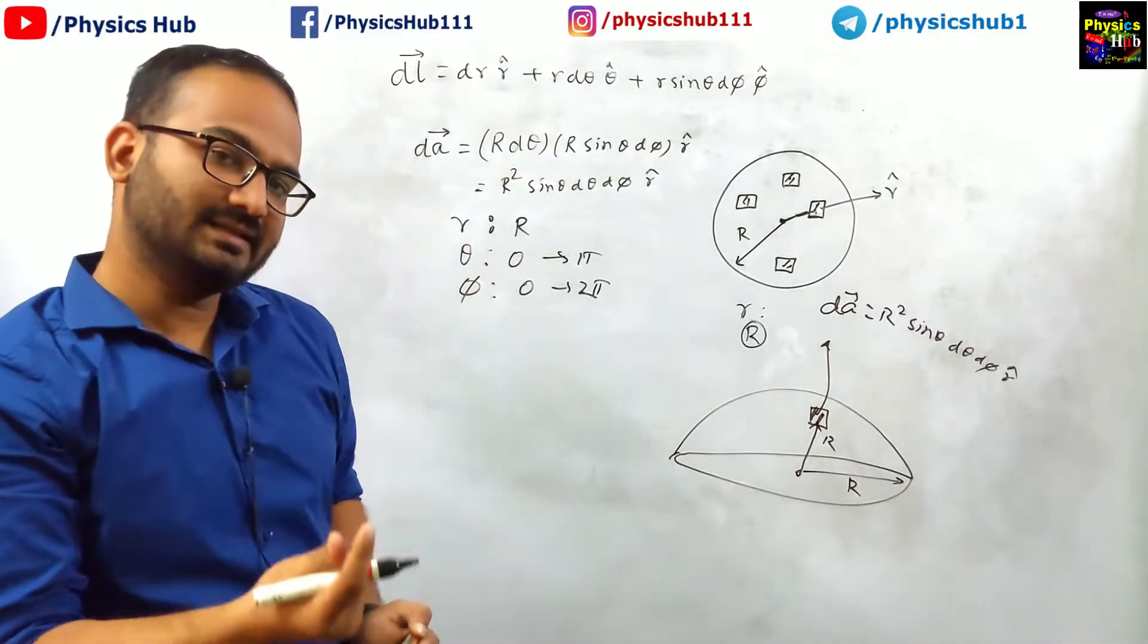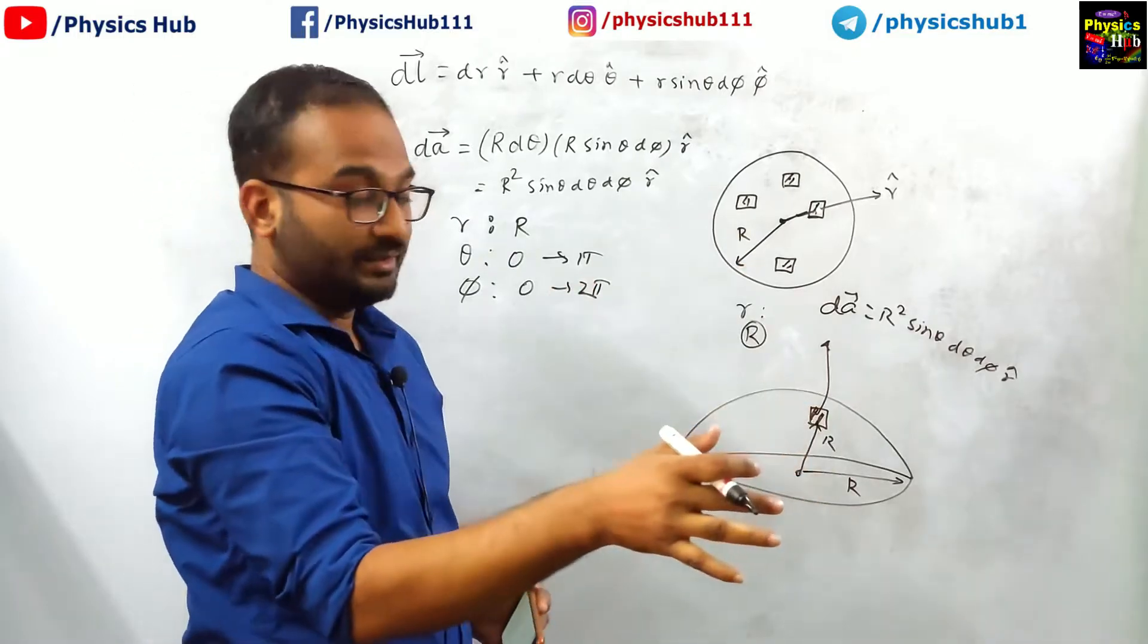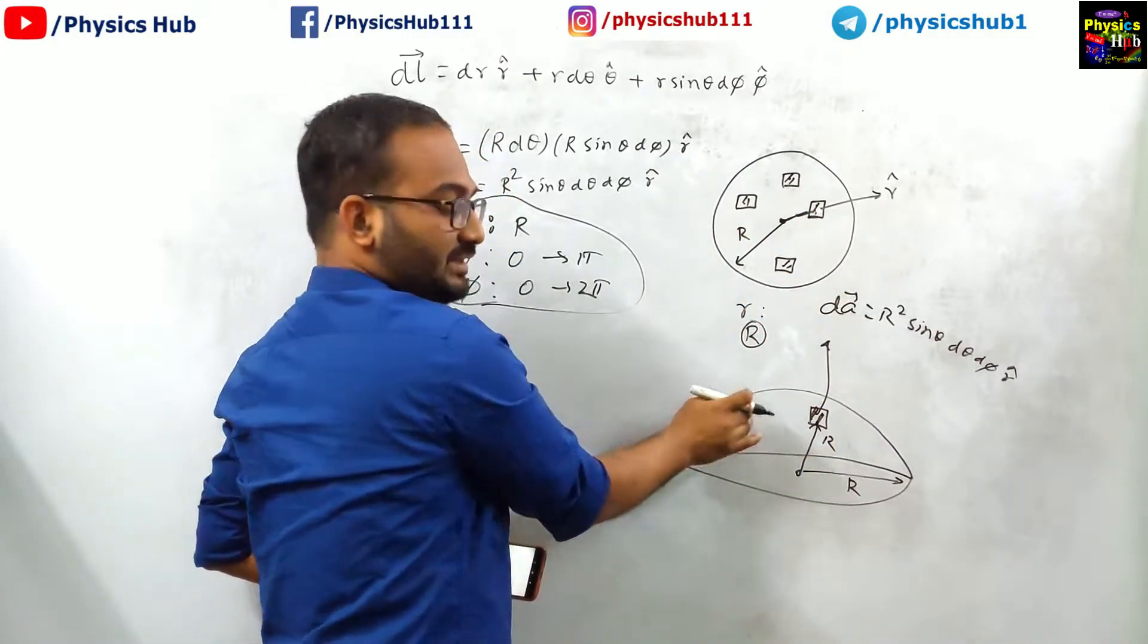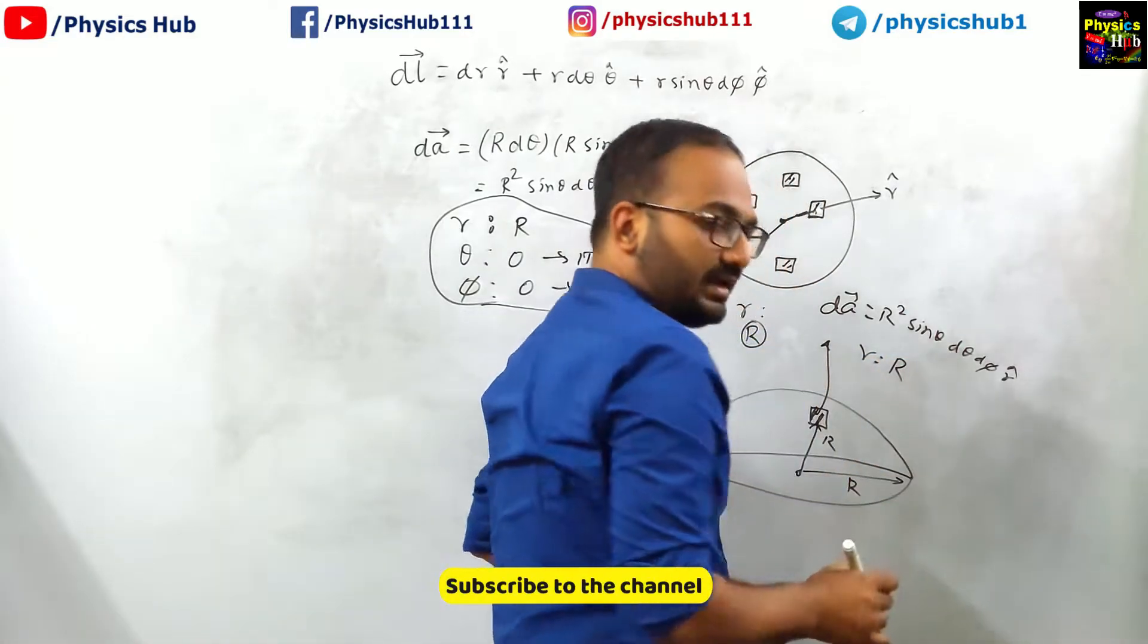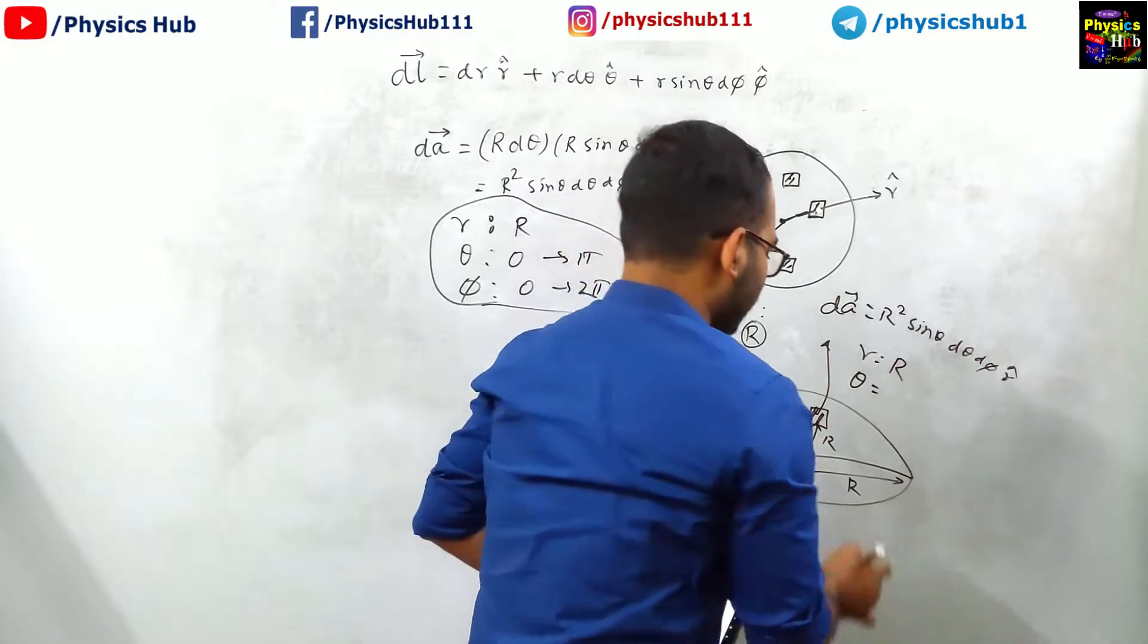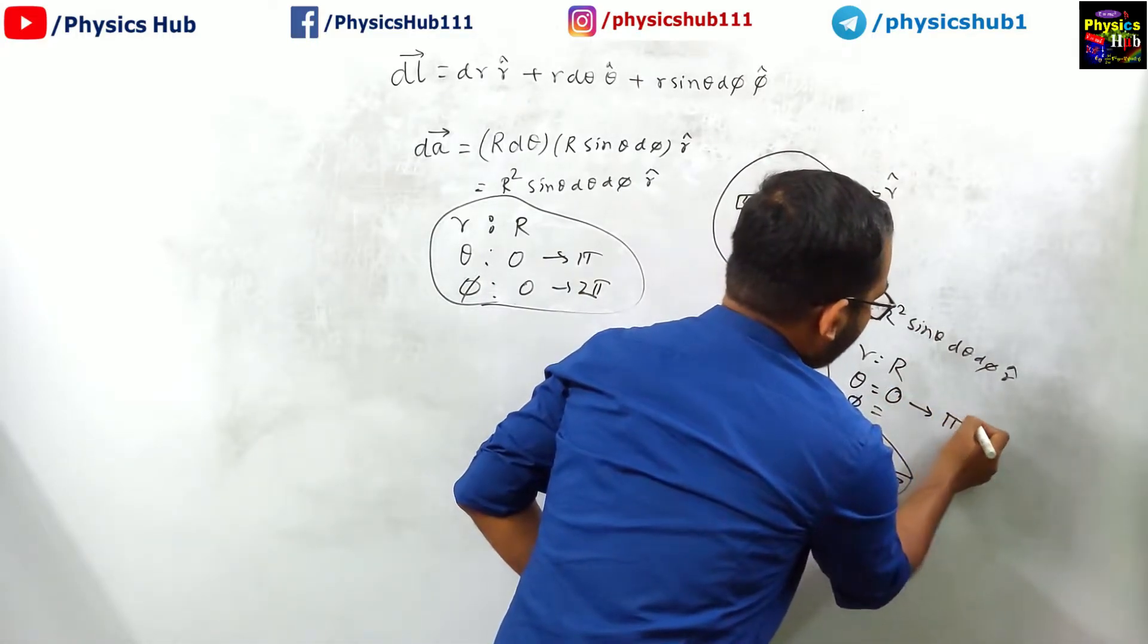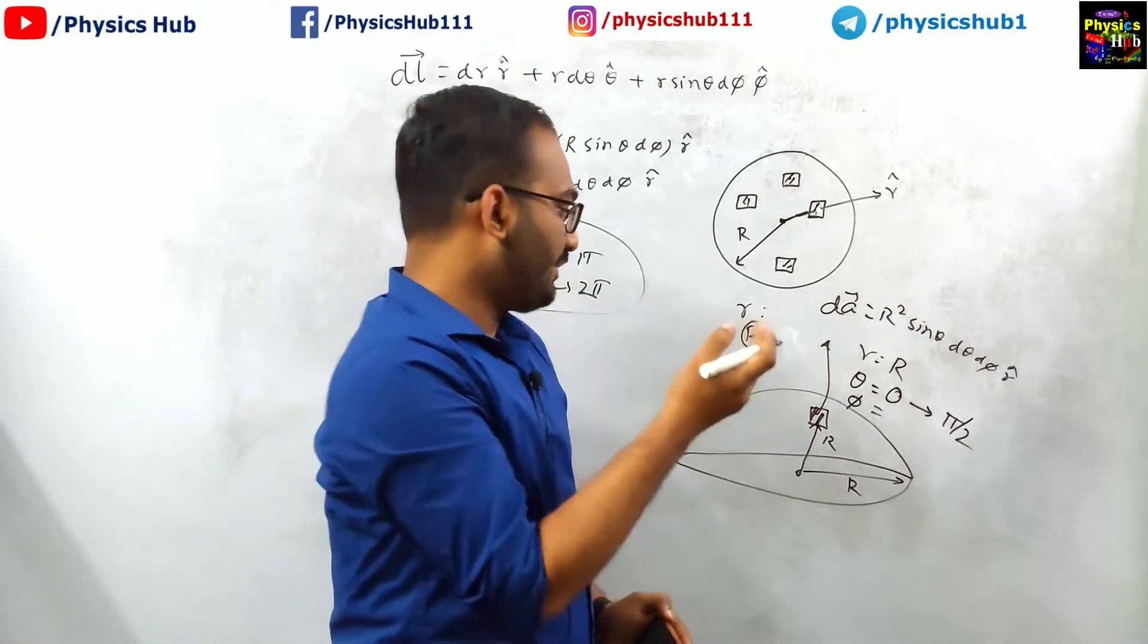But there is a small difference here. If you want to calculate the total area, we had to consider this for this surface. But if you proceed with this surface, your small r is remaining capital R as usual, but your theta and phi, what will be these values? Theta will now be varying between 0 to pi by 2 because this is a hemisphere.